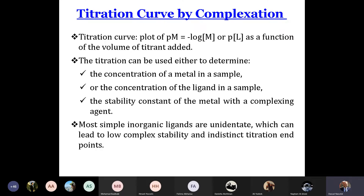In some cases, when we add a ligand to a metallic center M, we obtain several complexes. We call these successive complexes: ML, ML2, ML3, ML4, ML5. It depends on the data given.